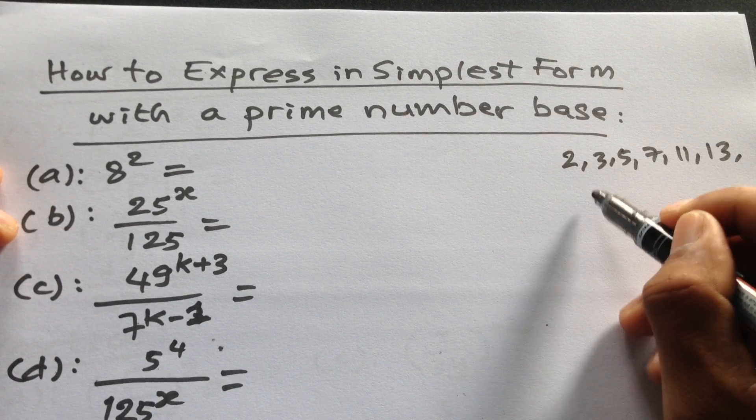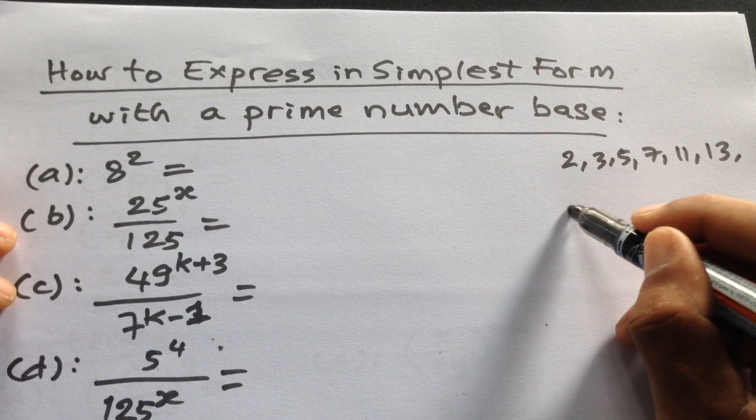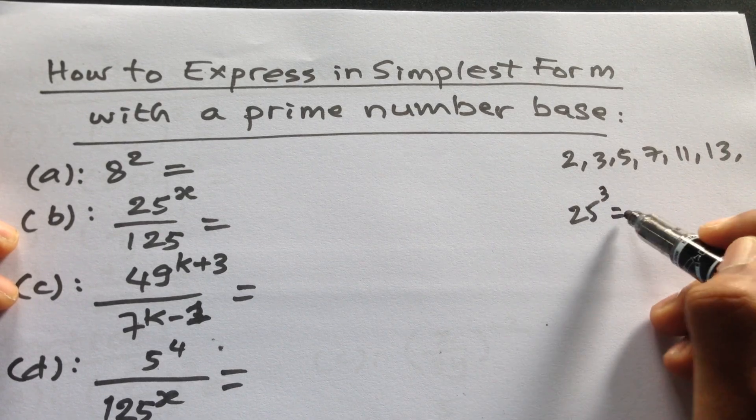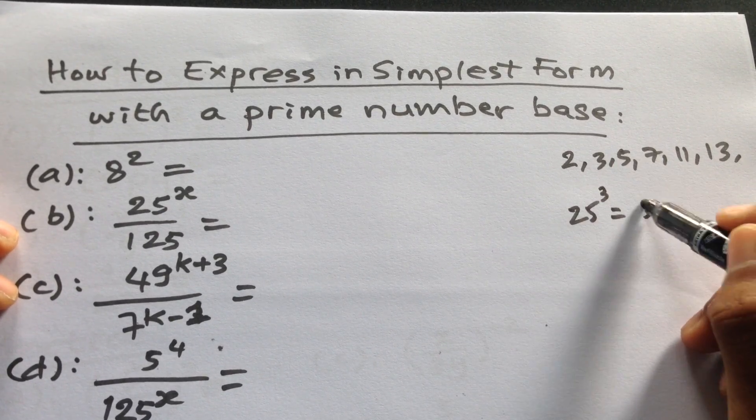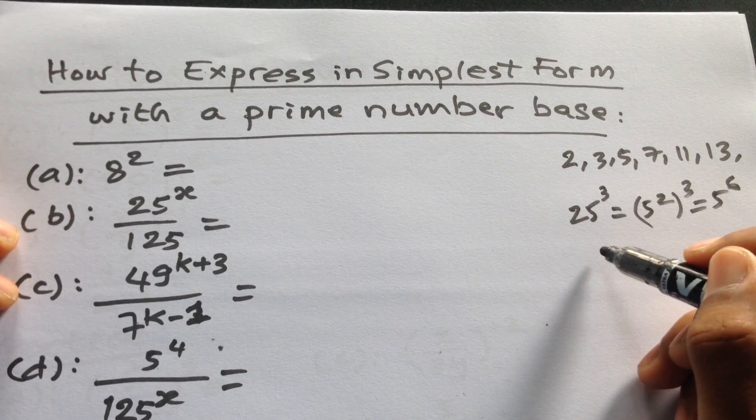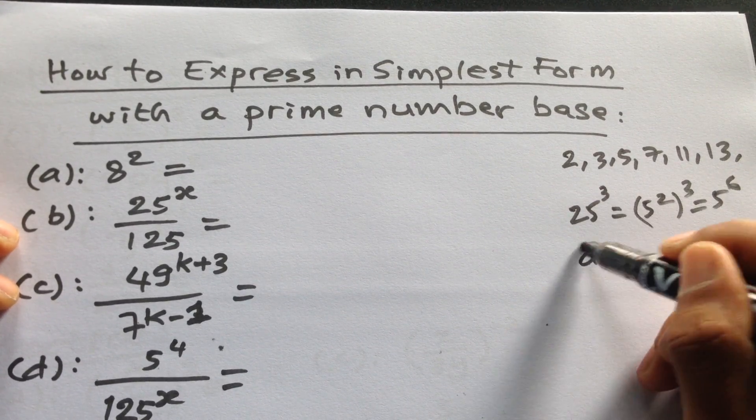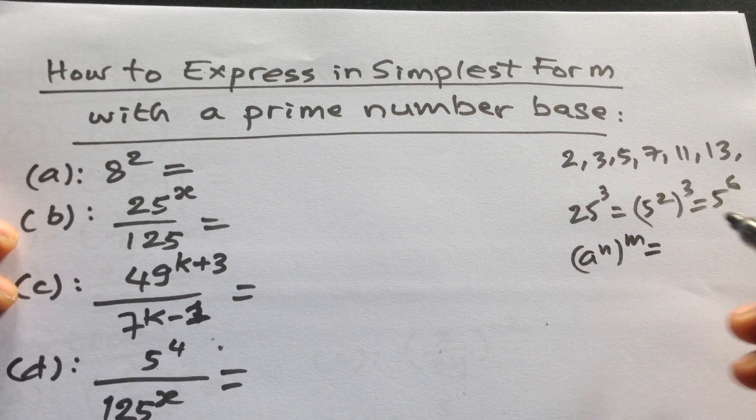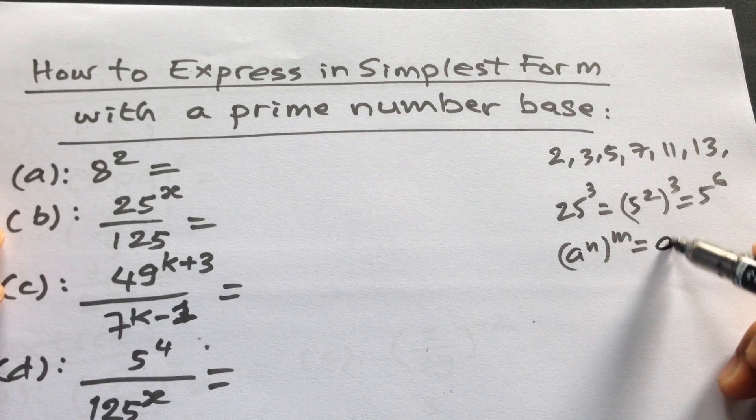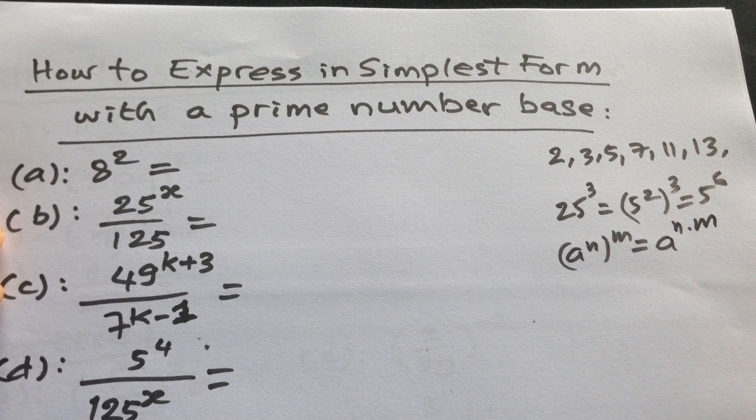we have 25 to the power 3. We can write this as 5 squared to the power 3, which gives us 5 to the power 6. We use the formula: a to the power m to the power n equals a to the power m times n.